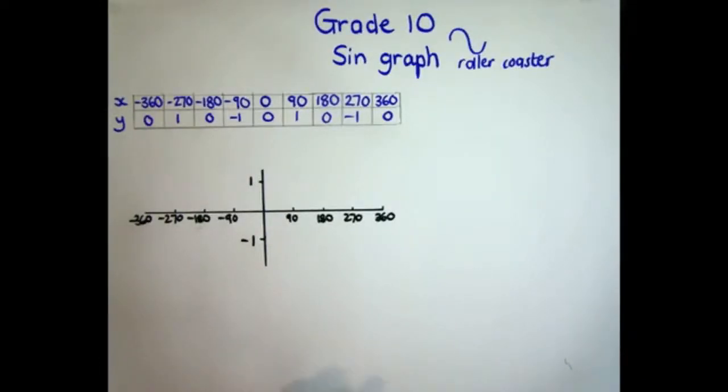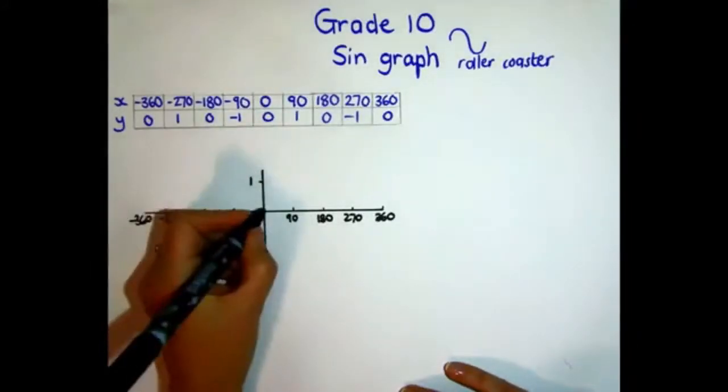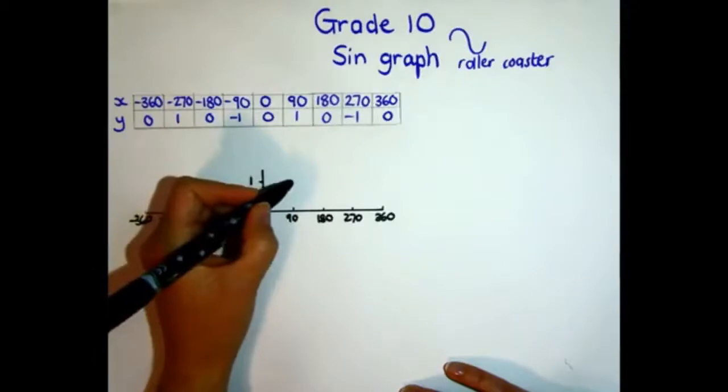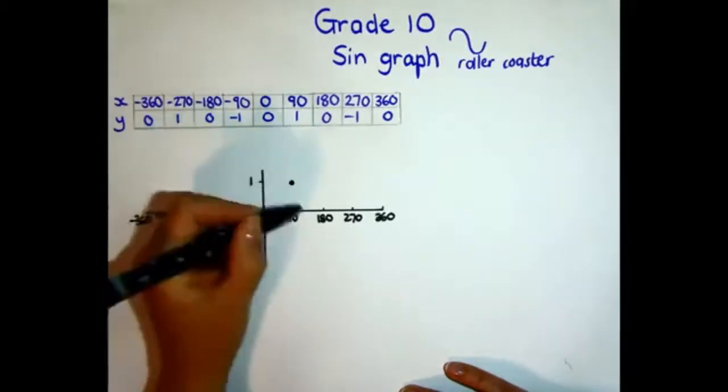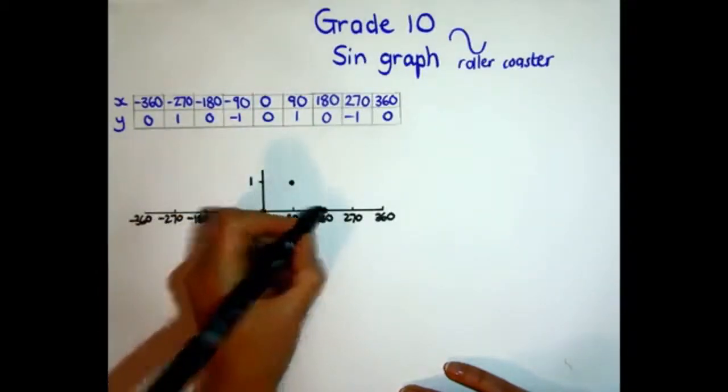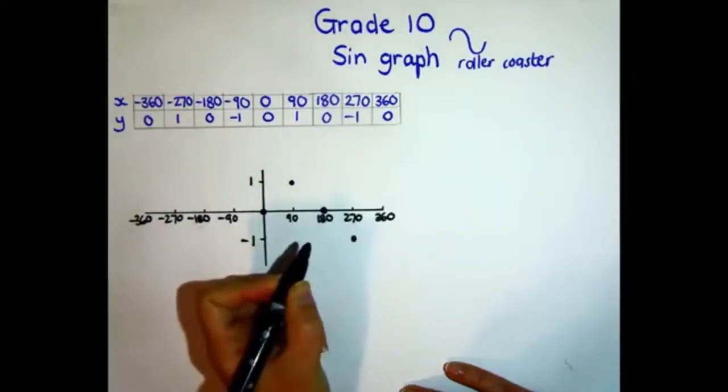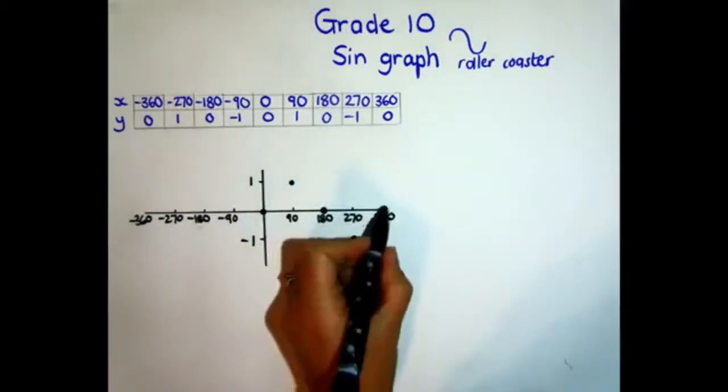Drawing in your graph is going to be a matter of plotting the points and then connecting the dots in the shape of a curve. So 0 and 0 is a point. 90 on the x and 1 on the y is a point. Then on 180 it goes back to 0, and on 270 it's negative 1, and on 360 it's 0 again. I've just plotted the positive side first.